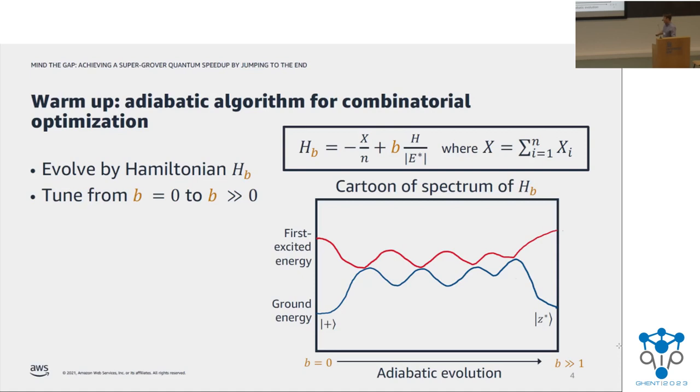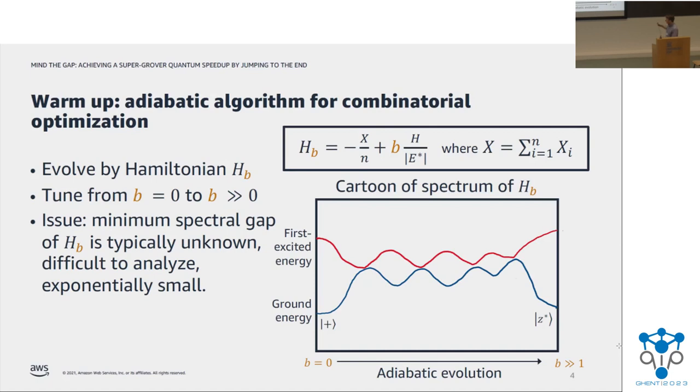Here's a cartoon of the spectrum of this Hamiltonian HB as a function of B, and you can see the adiabatic evolution is going to pass from left to right. The idea is that if we go slowly along this evolution, then we can interpolate from the initial ground state, which is the plus state and easy to prepare, to the final ground state, which is the bit string that optimizes our cost function. And this is guaranteed to work if we go sufficiently slowly, but if we go at some finite rate, there's a chance that it will fail, and the time that this takes is famously related to the minimum spectral gap encountered along the way. You can see here in the cartoon, the spectral gap can get very small, and additionally, it's sort of unknown exactly where they will occur. It's hard to analyze them, and in fact, it's known that for combinatorial optimization, they can be exponentially or even super exponentially small. So this leads this algorithm to be interesting and potentially something that could give a super Grover speedup in some cases, but hard to analyze and hard to prove anything concrete.